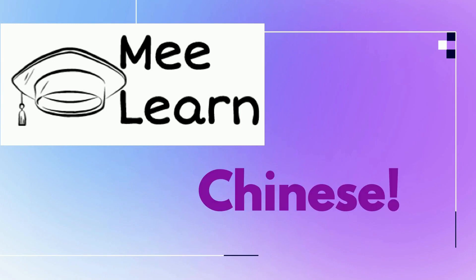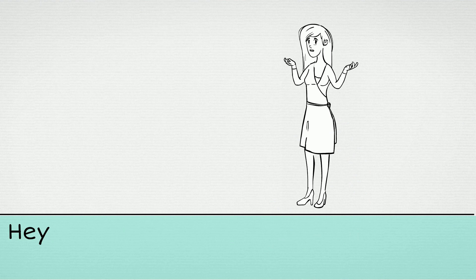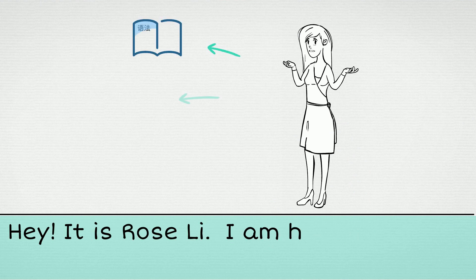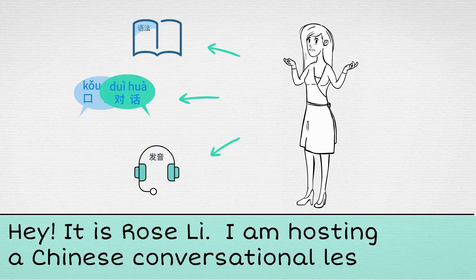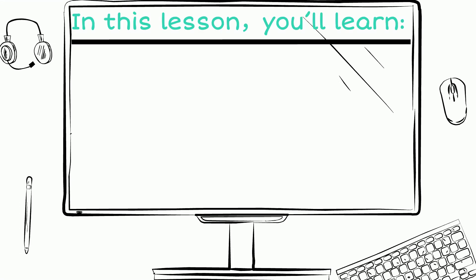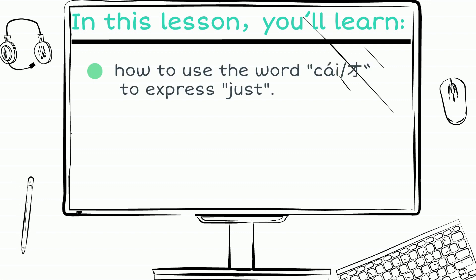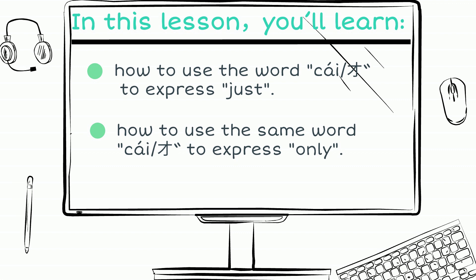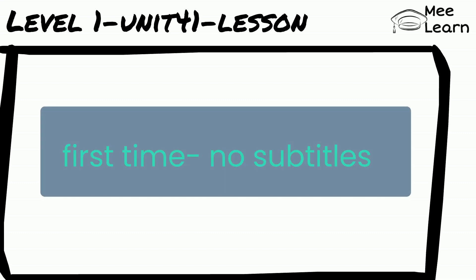Welcome to MeeLearn Chinese. Hey, it's Rose Lee. I'm hosting a Chinese conversational lesson. In this lesson, you will learn how to use the word 才 to express 'just.' You will also learn how to use the same word 才 to express 'only.' First, let's listen to some conversations.